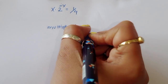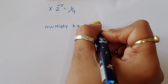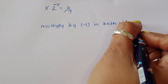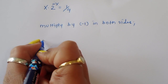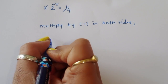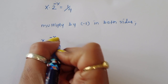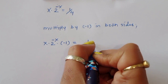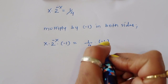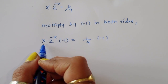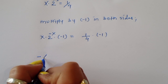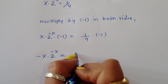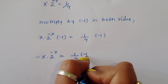Multiplying both sides by minus 1, we get minus x times 2 power minus x is equal to 1 upon 4 times minus 1, which is minus 1 upon 4.